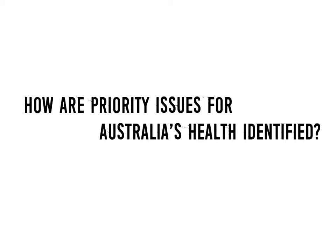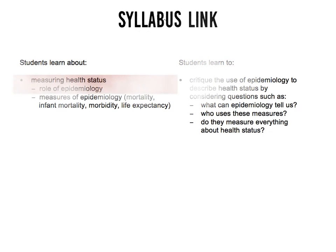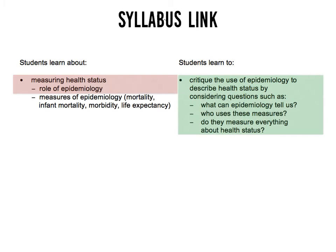This presentation will address the focus question: how are priority issues for Australia's health identified? It will focus specifically on measuring health status and the role of epidemiology, with a particular focus on using epidemiology to describe health status — including what epidemiology can tell us, who uses the measures, and whether epidemiology tells us everything about health status.